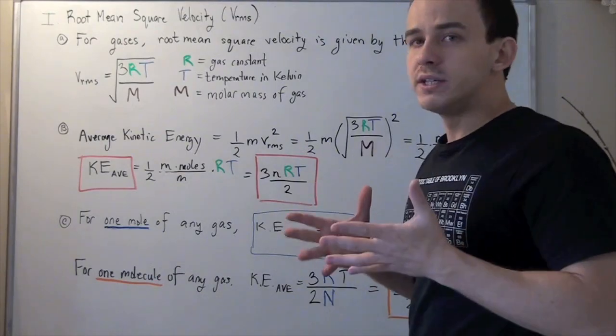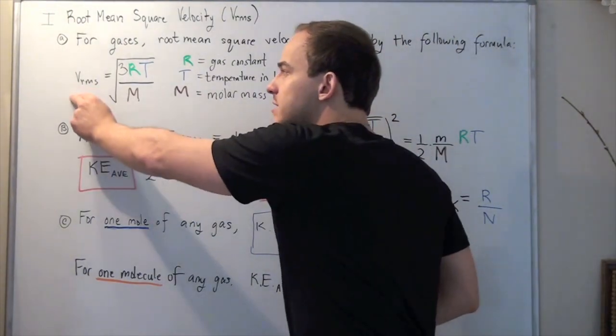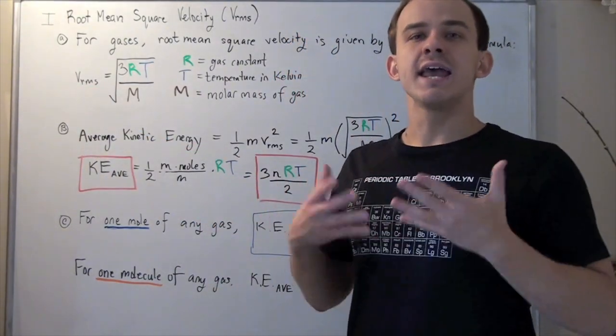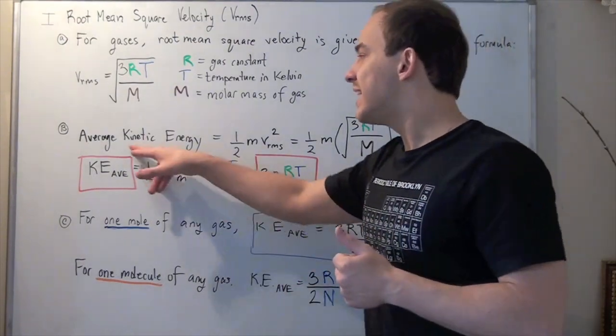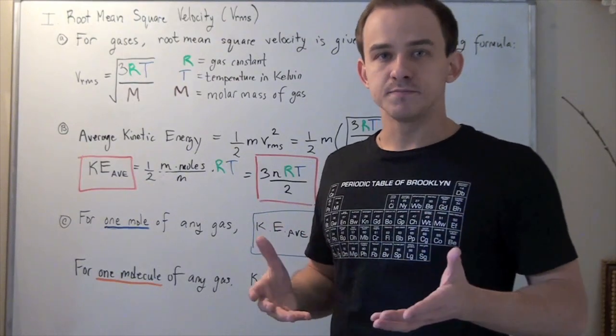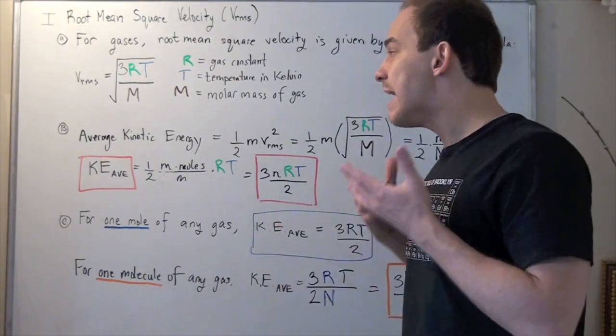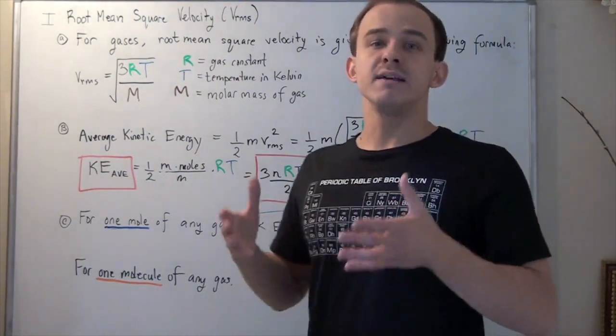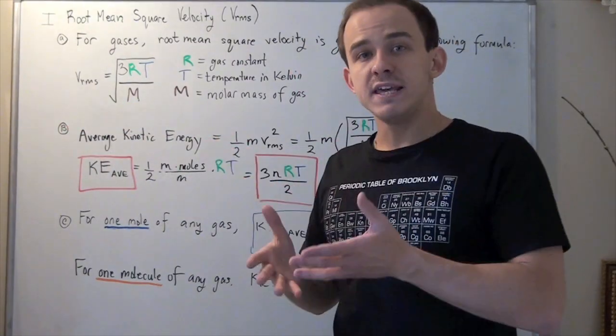Now my goal is I want to use this VRMS to find the average kinetic energy. Because remember, kinetic energy of anything is given by 1/2 times mass times V squared. Now to find the kinetic average, I basically plug in my VRMS into my V.